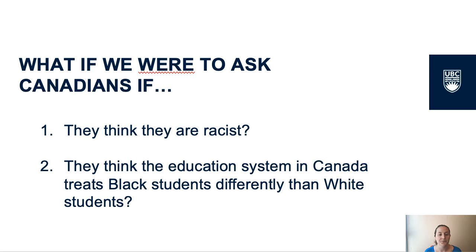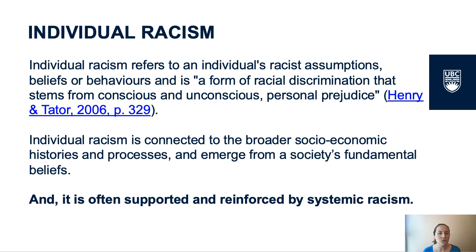Before we jump to the next slide, let me ask you two questions. What do you think people would say if we asked them: one, do they think they are racist? And two, do they think the education system in Canada treats black students differently than white students? The first question concerns individual racism. Individual racism refers to an individual's racist assumptions, beliefs, or behaviors — it is a form of racial discrimination that stems from conscious and unconscious personal prejudice (Henry and Tater, 2006). Individual racism can be overt and obvious, polite and subtle, or subliminal and unconscious — that is, prejudices which individuals are unaware of but that display themselves in discriminatory beliefs and behaviors. Individual racism is connected to and learned from broader socioeconomic histories and processes, and is supported and reinforced by systemic racism.